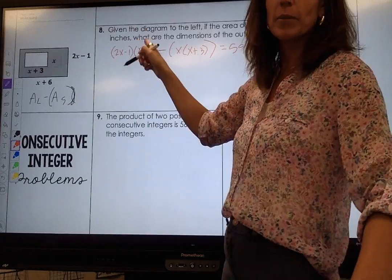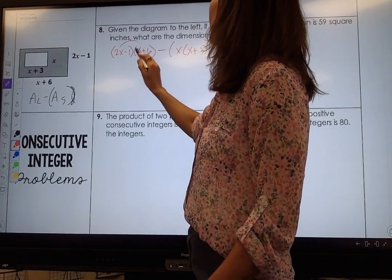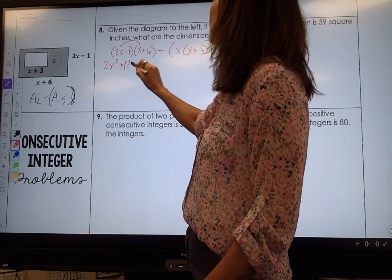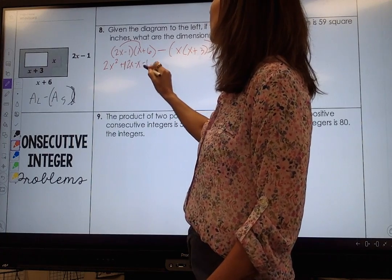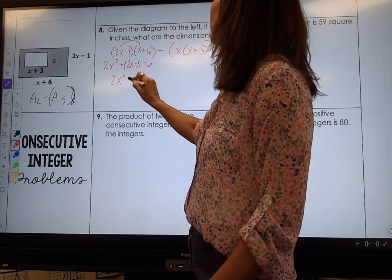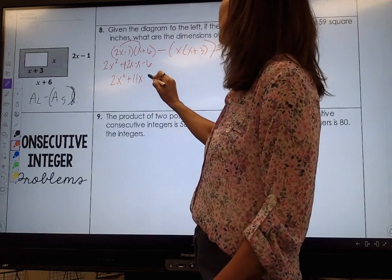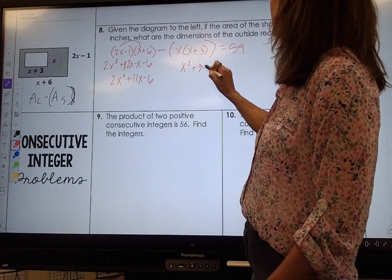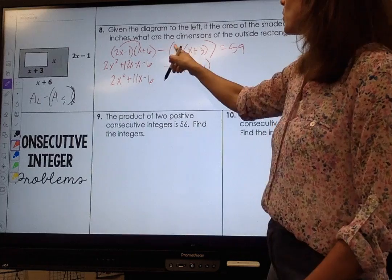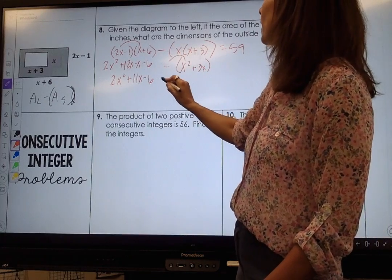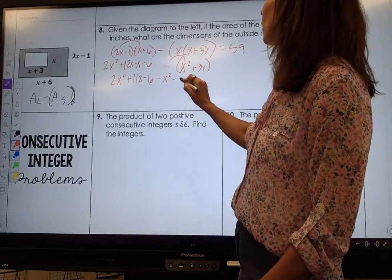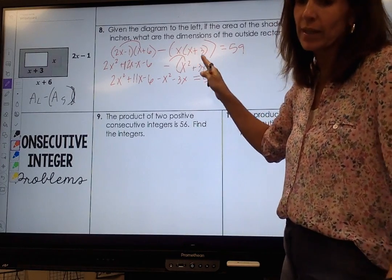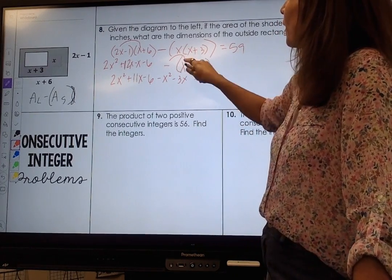I have a binomial times a binomial so I'm going to foil it. Here I get 2x squared plus 11x minus 6, and over here I get x squared plus 3x, but remember I'm subtracting it so I distribute that negative and I get negative x squared minus 3x all set equal to 59.